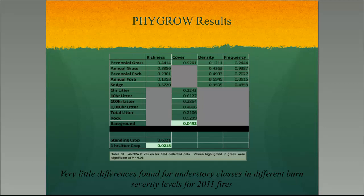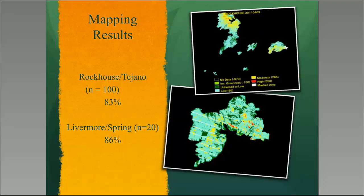The tree overstory was knocked out, but the understory in a lot of these areas was making a pretty dramatic comeback. When the CBI was developed and these burn severity maps were designed, most were built for coniferous forests — totally different from what we're dealing with. We're looking at mixed grasslands, and grass is really important down here. In discussions with agency people, they basically said they had never paid much attention to grasses. There is now some new work being developed on how to use burn severity maps to address grass recovery.